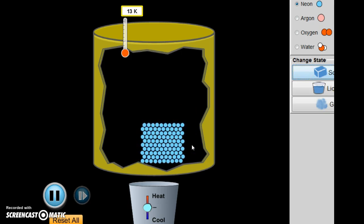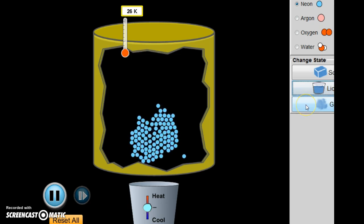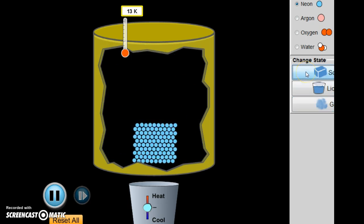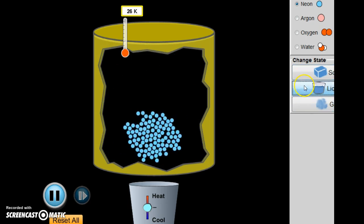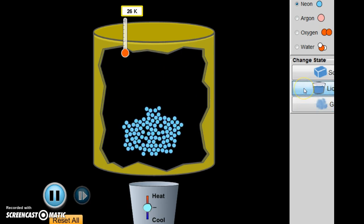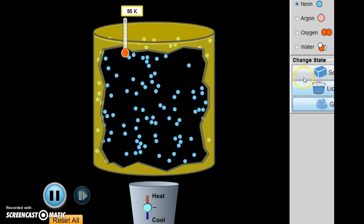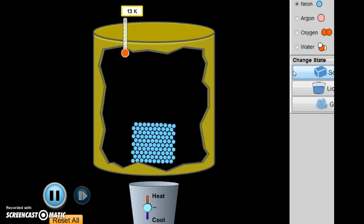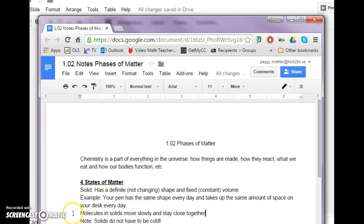In solids, the atoms are still moving. They're just moving really slowly. And besides the fact that they're moving slowly, how else would you describe the change in the atoms when you change phases, or sorry, change states from solid to liquid to gas? Well, when are they going the fastest? Going the fastest as a gas, and the slowest as a solid. And so, let's add to our notes, molecules and solids move slowly and stay close together. But note, solids do not have to be cold.